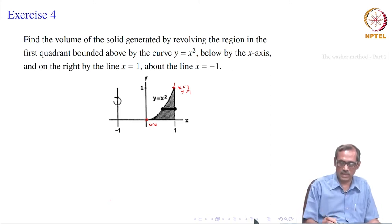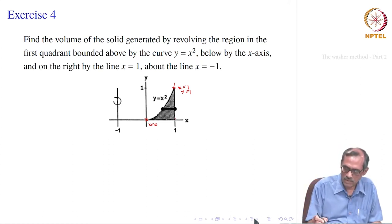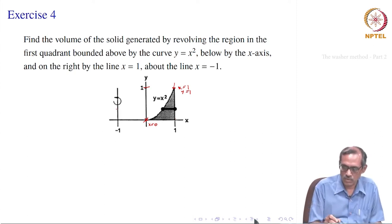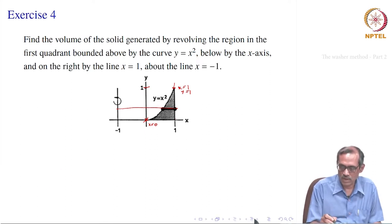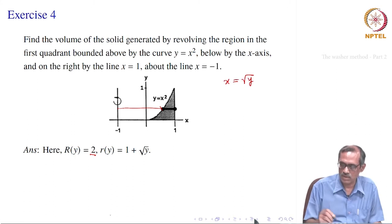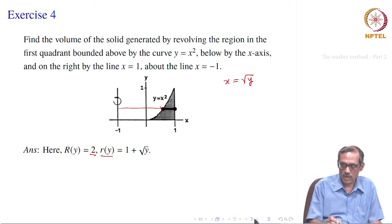Since x equal to minus 1 is parallel to the y axis, we express everything in terms of y. The limits for y are from 0 to 1. The outer radius R(y) equals 2 (from x equal to minus 1 to x equal to 1), and in the first quadrant x equal to root y, so the inner radius r(y) equals 1 plus root y.